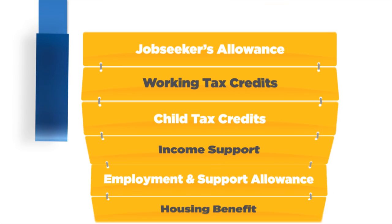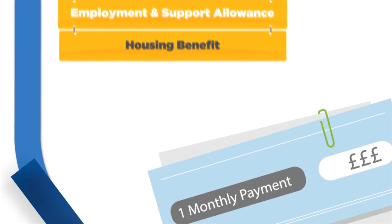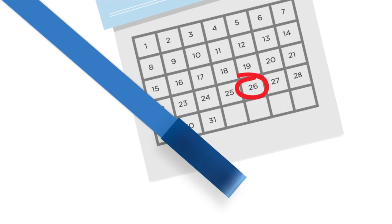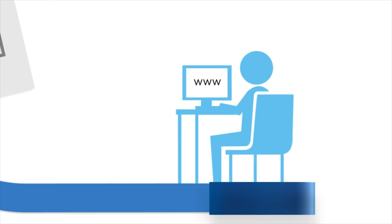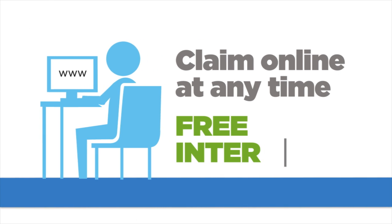It replaces six benefits including job seekers allowance, tax credits and housing benefit with one single monthly payment. Universal Credit is usually claimed online. Your job centre can tell you about local places where you can access the internet for free.